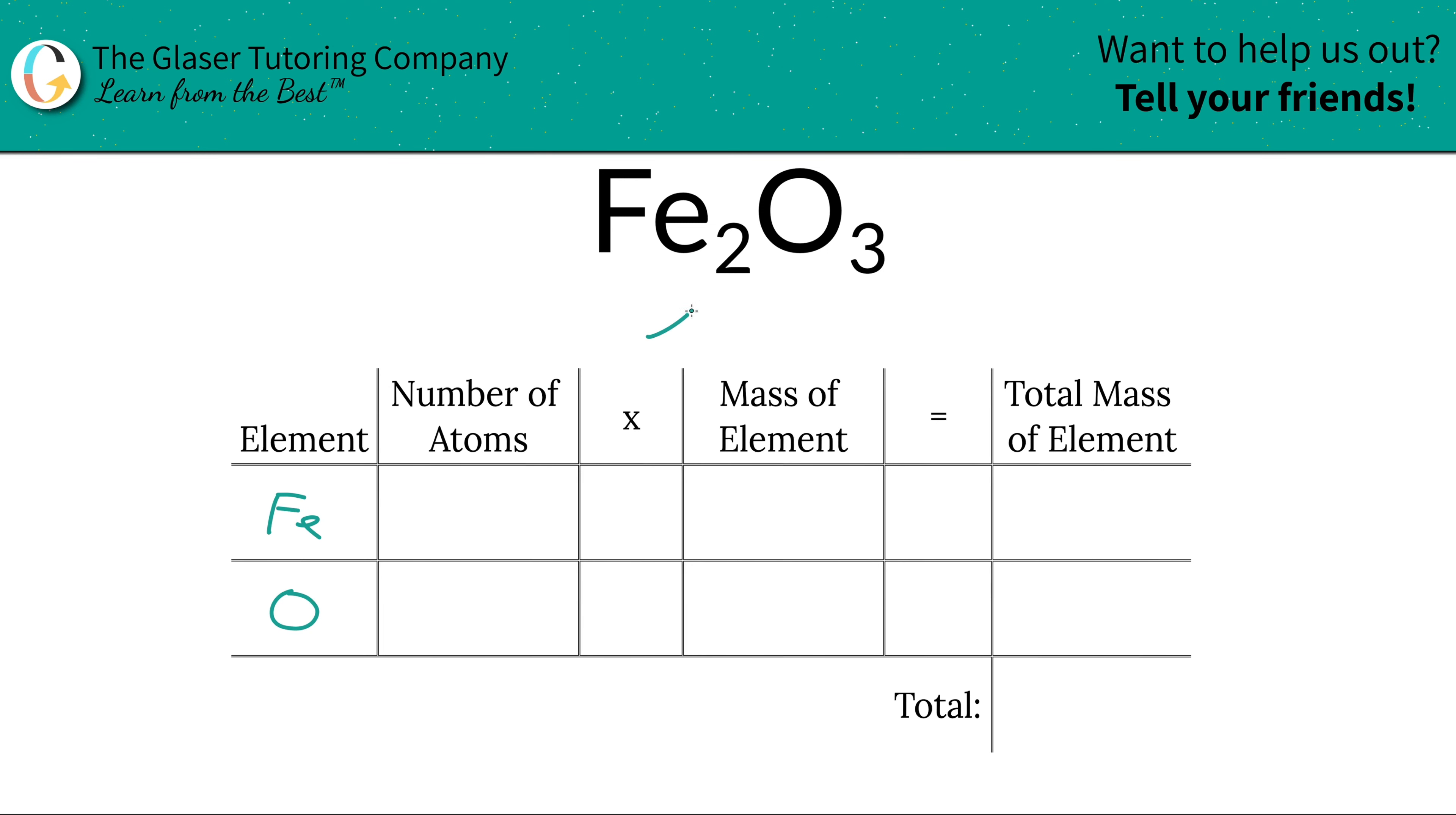Next is the number of atoms. That's where the subscripts come into play. So there are two iron atoms, so we write a two. There are three oxygen atoms, so we write a three.